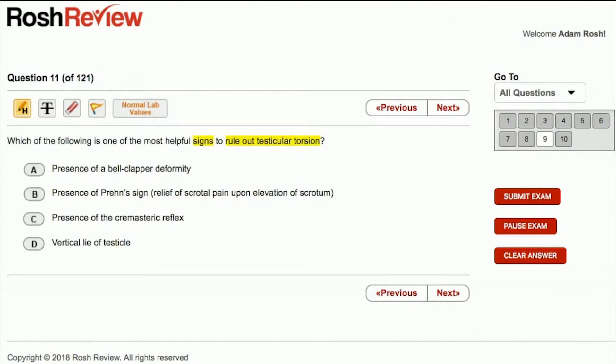Answer choice A, presence of a bell clapper deformity. A bell clapper deformity is not necessarily something we're going to see that well on clinical exam but ultimately it's going to result in a horizontal lie of the testicle. And so even in the presence of a bell clapper deformity, that's a risk factor for torsion but it certainly doesn't buy it. It certainly isn't ruling out testicular torsion. So I am going to cross off that answer choice.